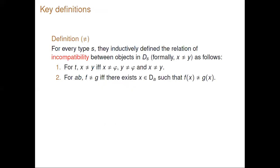Before taking into consideration whether it is possible to prove the nameability theorem, let us introduce some key definitions to understand how things work here. First, it is important to highlight the definition of incompatibility between objects of a given type. For type T, the objects which are incompatible are just true and false. For any arbitrary type AB, two functions are incompatible if there exists some x in their domain such that the images of this argument under these functions are incompatible.